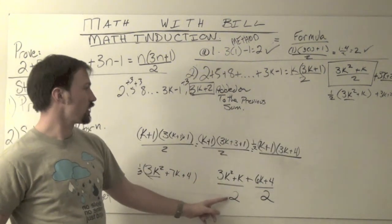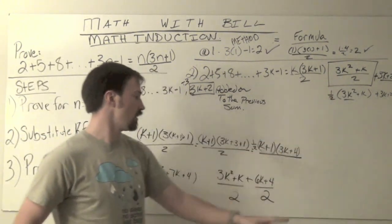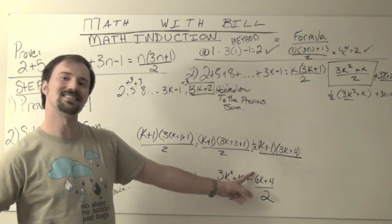My 3k squared plus k, and now I can bring down my sets of parentheses. 3k squared plus k, which is exactly what we needed. And if you look here and simplify,